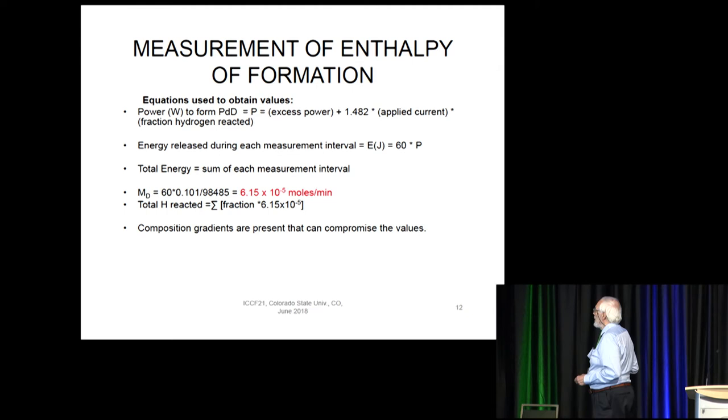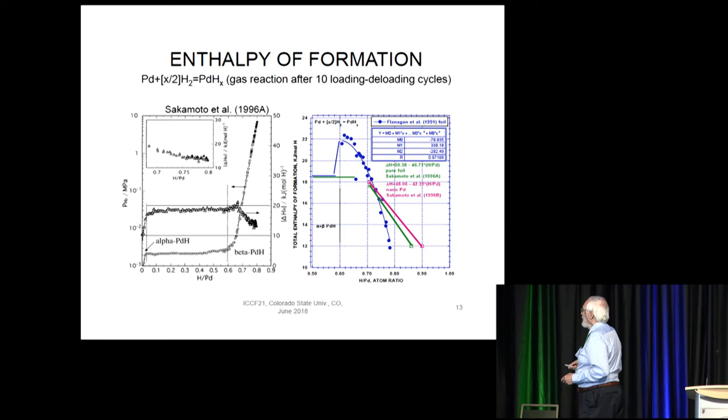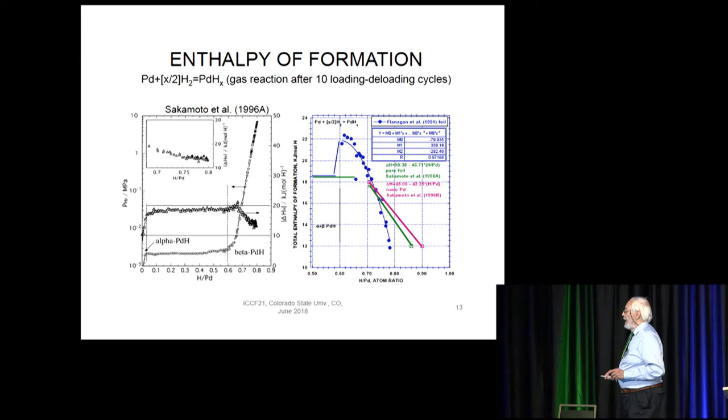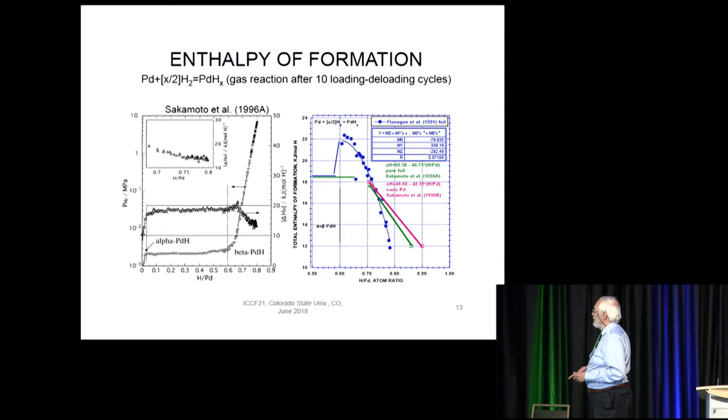Now the enthalpy of formation can also be obtained from this because we know how much hydrogen is reacting and we know the energy that that has resulted in producing using the calorimeter. But before I show you my data I'd like you to see what the literature shows. There are three measurements reported in the literature for the enthalpy of formation as a function of composition. And this is done by placing finely divided palladium in a calorimeter. They will load it and deload it ten times in order to activate the surface so that it loads very quickly and then they will apply a known pressure and that will result in a characteristic composition and in that process energy is given off and they measure that energy and report it as enthalpy of formation.